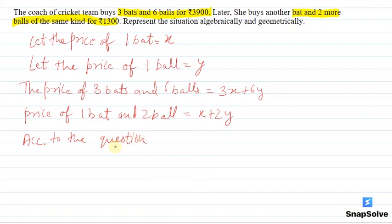According to the question, if we take 3 bats and 6 balls, the cost is 3900, so 3x plus 6y equals 3900. Same way, 1 bat and 2 balls cost 1300.